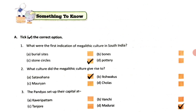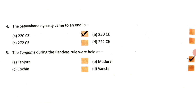Section A: Tick the correct option. Question 1: What were the first indications of megalithic culture in South India? Question 2: What culture did the megalithic culture give rise to? Question 3: The Pandyas set up their capital at... Question 4: The Satavahana dynasty came to an end in 220 Common Era.